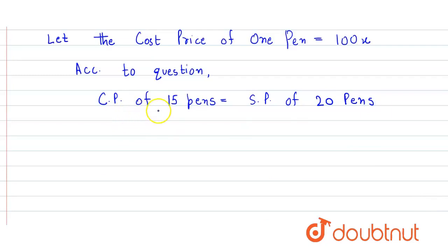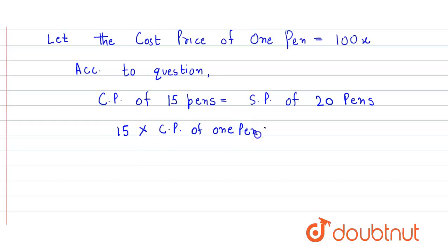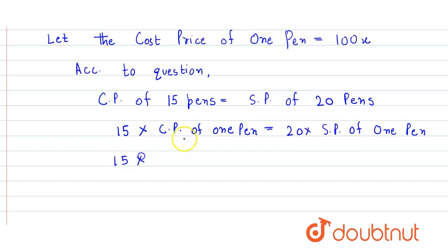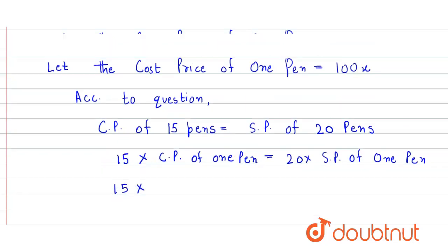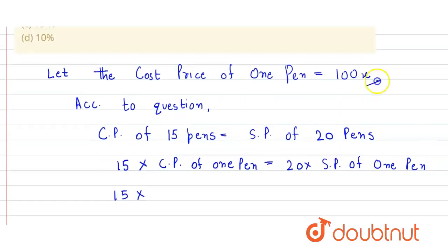So this can also be written as 15 into the cost price of one pen is equal to 20 into the selling price of one pen. We have considered the cost price of one pen to be 100x.